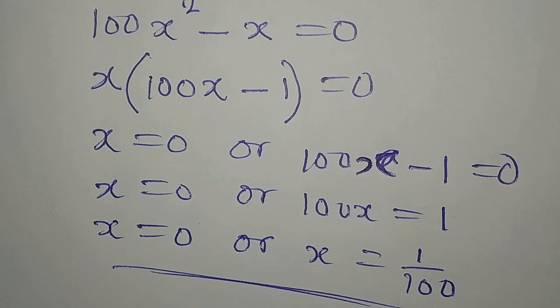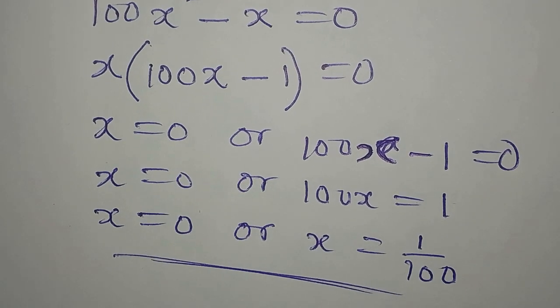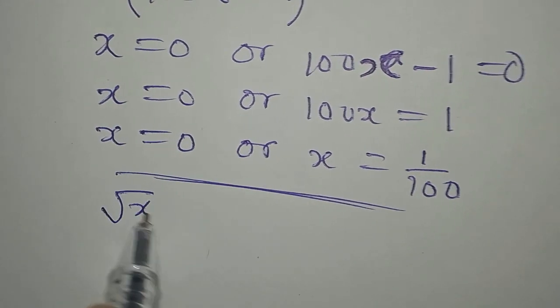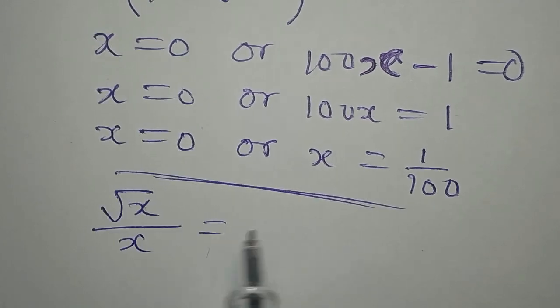So from here we have the two values of x. But let's look at the original equation: we got square root of x over x equals 10.